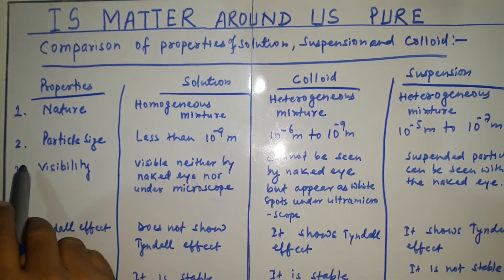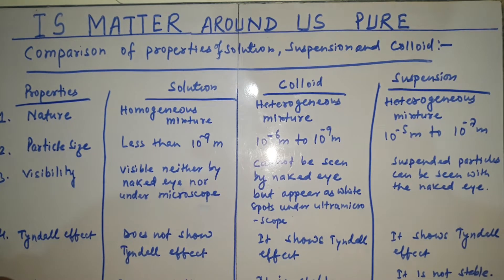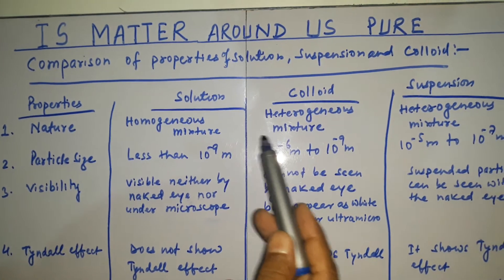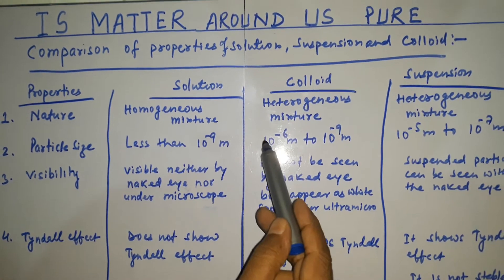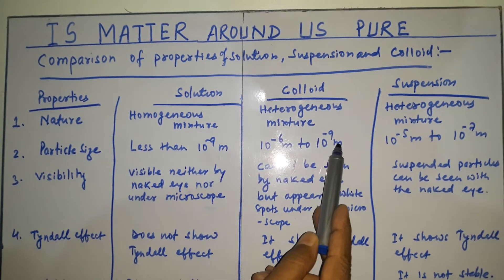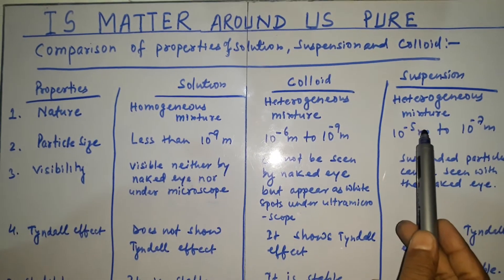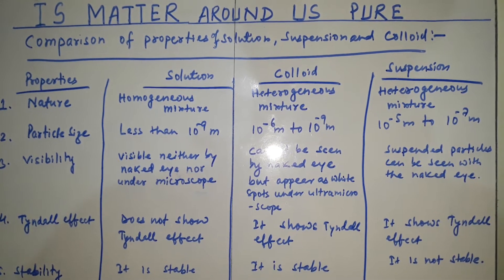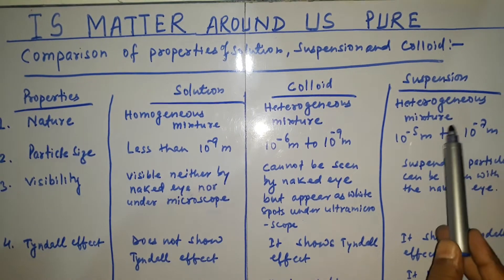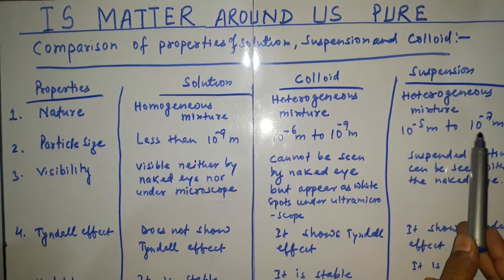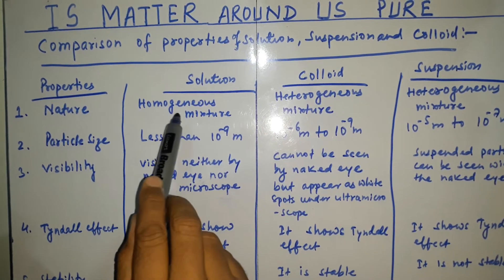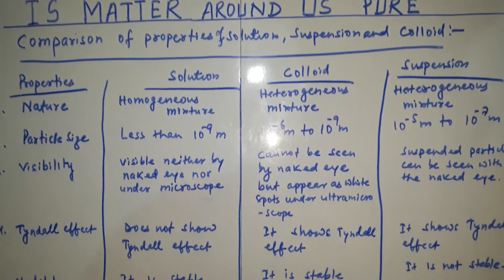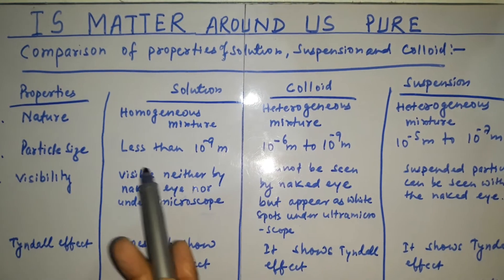Second is particle size. The particles of solution are smallest in size — less than 1 nanometer. The particles of colloid are in the range of 10⁻⁶ to 10⁻⁹ meters. The size of suspension particles are in the range of 10⁻⁵ to 10⁻⁷ meters. So solution particles are the smallest and suspension particles are the biggest. The range is given here; we cannot find the actual exact size.